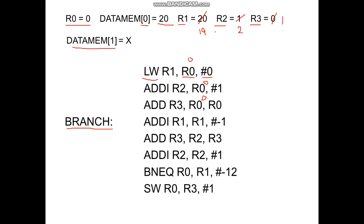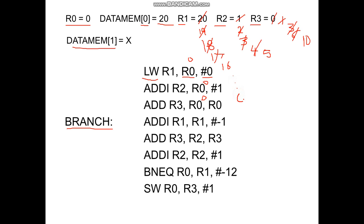We continue the same for 20 iterations. In the first iteration R1 becomes 18, we add 1 plus 2 and it becomes 3, R2 is incremented to 3. Then R1 decrements to 17, we add 3 plus 3 and it becomes 6, R2 is incremented to 4. Then R1 decrements to 16, we add 6 plus 4 and it becomes 10, R2 is incremented to 5, and so on. After 20 iterations R1 finally becomes 0, and since both R0 and R1 are equal to 0, the processor comes out of the loop. By that time R2 would be at 20, and the sum of 1 plus 2 plus 3 plus 4 and so on till 20 is 210.